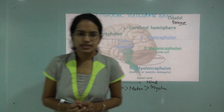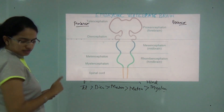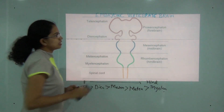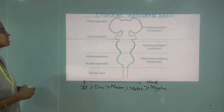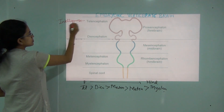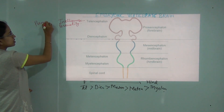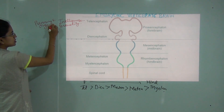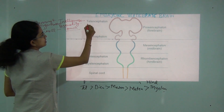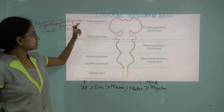Now let's understand each part in detail. The first part of the brain is the telencephalon, which is part of the prosencephalon. The main functions of telencephalon include determination of intelligence, personality, planning and organisation, and the sense of smell and touch. The forebrain also includes the lateral ventricle and the third ventricle besides telencephalon and diencephalon.